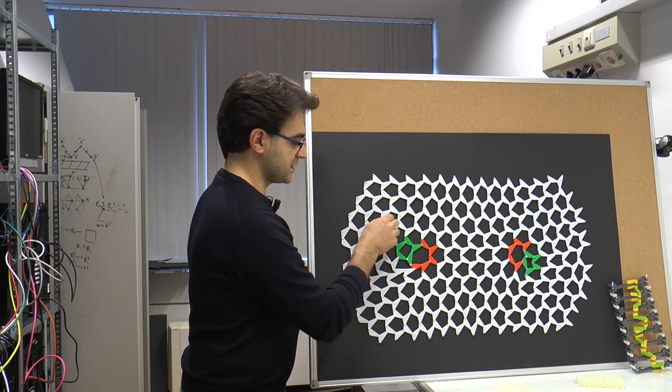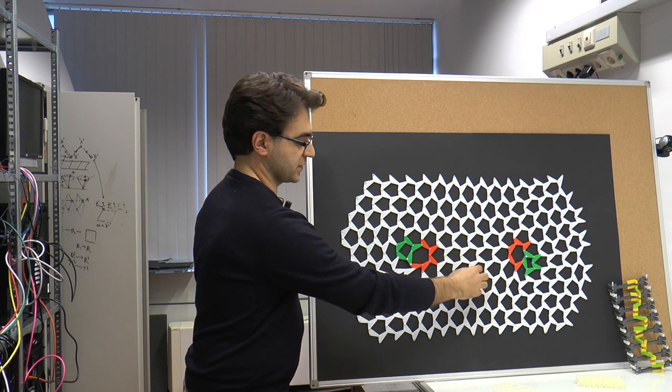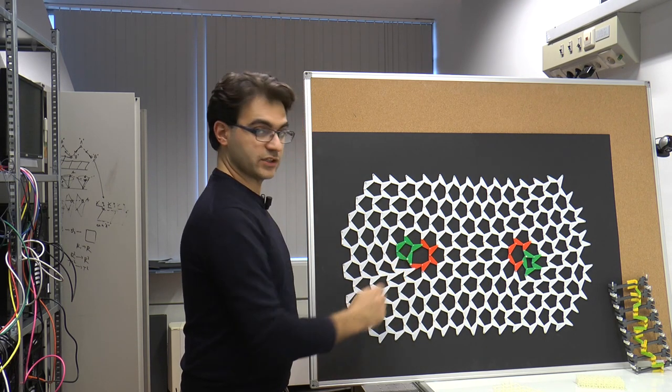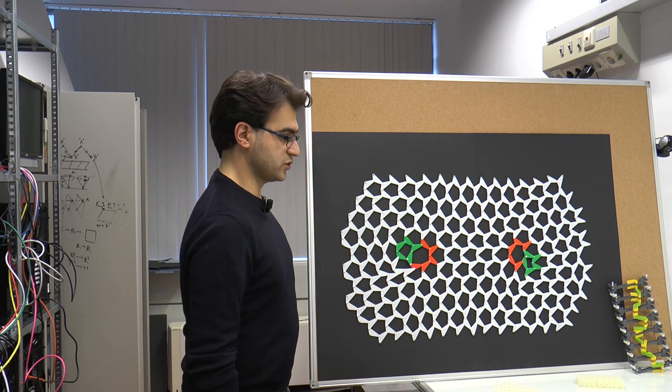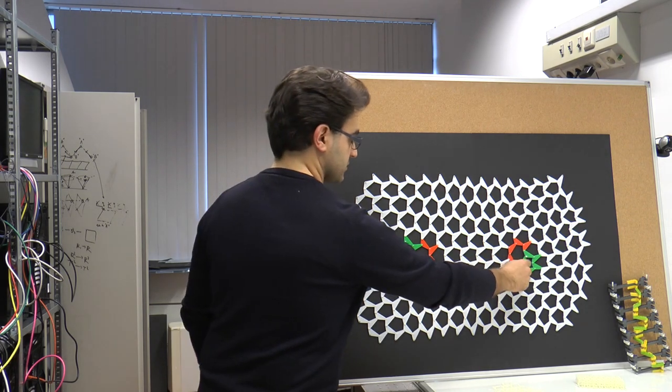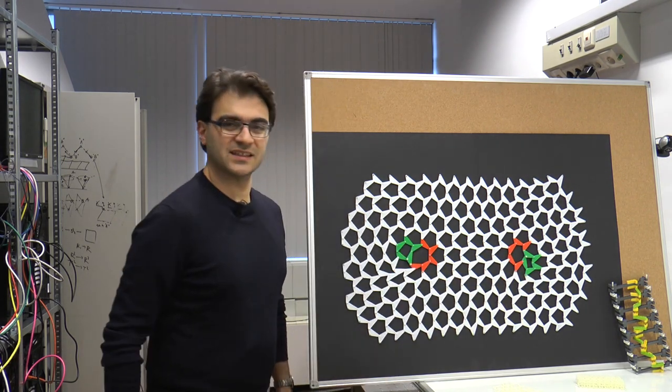Notice that everywhere far from the dislocation, the structure is rigid. However, this dislocation supports a zero energy mode. The other dislocation, which cannot move, supports a state of self-stress.